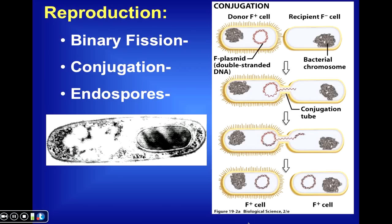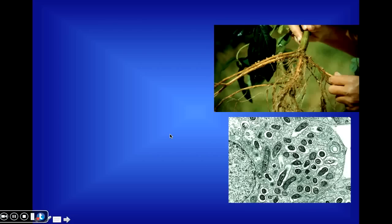Many bacteria can also produce endospores. In this micrograph, we see a section through a bacterial cell with a large structure inside. Although you might be tempted to call it a nucleus, recall that bacteria don't produce nuclei. What that is, essentially, is the DNA of the bacterium walled off to form a very resistant structure called an endospore.